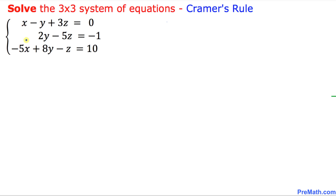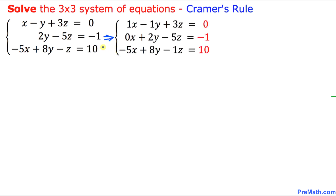Keep in mind that the x variables must be nicely lined up, y variables must be lined up as well, and z variables as well. In the second equation, the x variable is missing. Whenever any variable is missing, we put down 0 times that variable. In the first equation, the coefficient of x is missing, so it's going to be 1 by default, the coefficient of y is going to be negative 1, and in the third equation, the variable z is going to be negative 1.